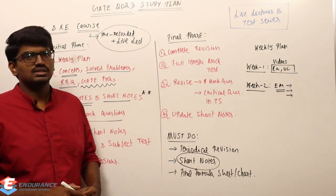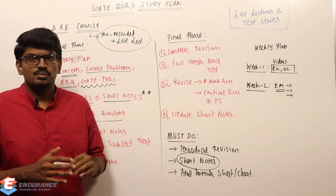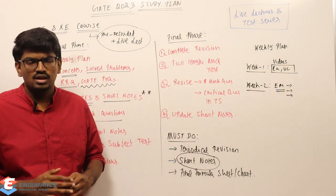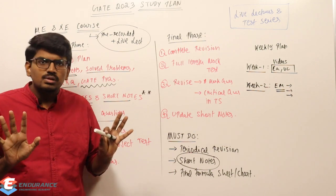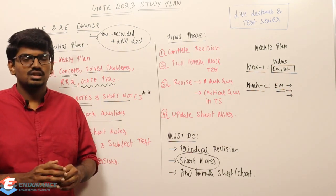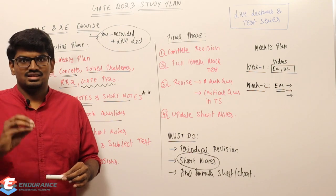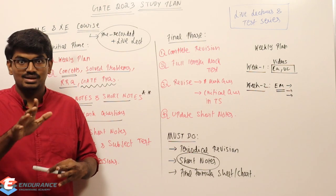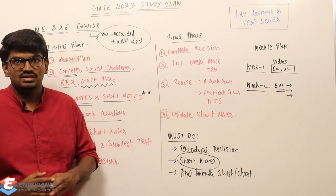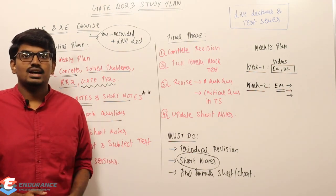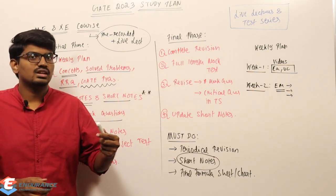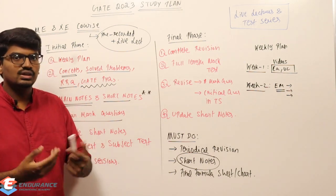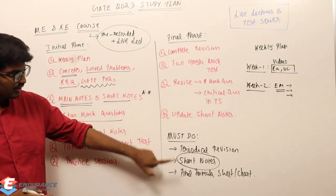Now, star mark questions: suppose you are solving 100 GATE previous year questions and there are five, ten, or twenty questions you are not able to solve at the first attempt — those are troublemakers. What you need to do is star-mark them and keep them separately. That star indicates those are the questions which are troubling you, so you can come back and revise them later.